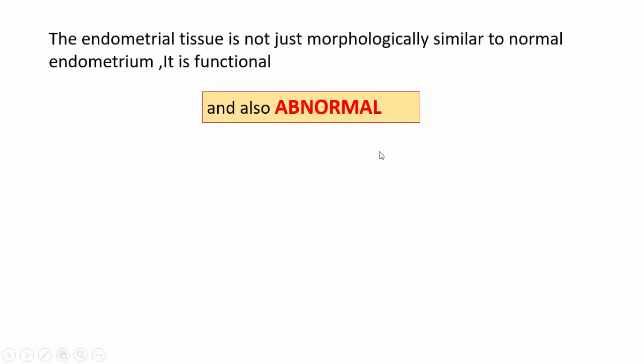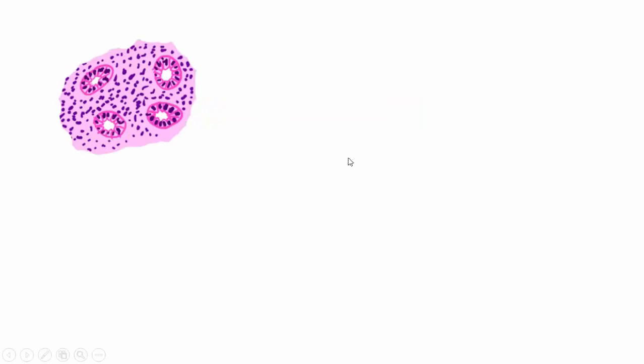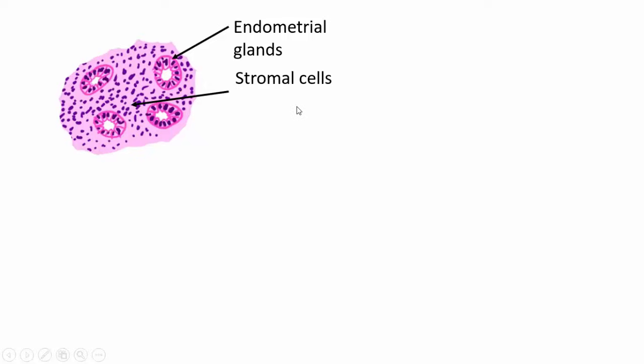The endometrial tissue is not just morphologically similar to the normal endometrium — it is also functional. This endometrial tissue outside the uterus functions just like endometrial tissue within the uterus. However, the important thing is that it is abnormal. This is an endometrial tissue showing endometrial glands and stromal cells. Why is there abnormality in the functioning of this endometrial tissue? Let us understand this.